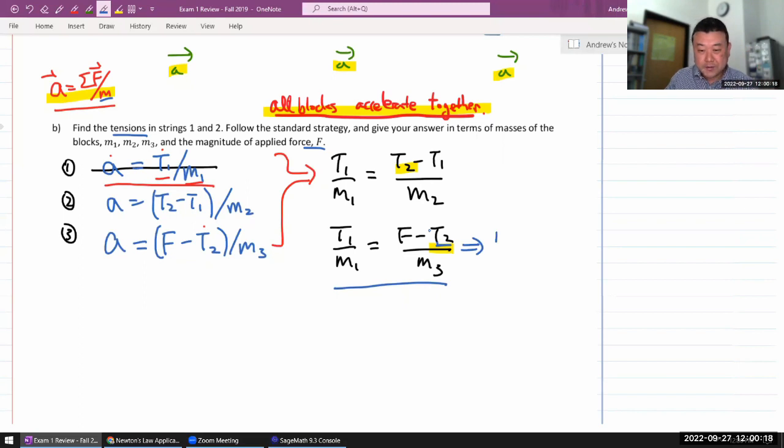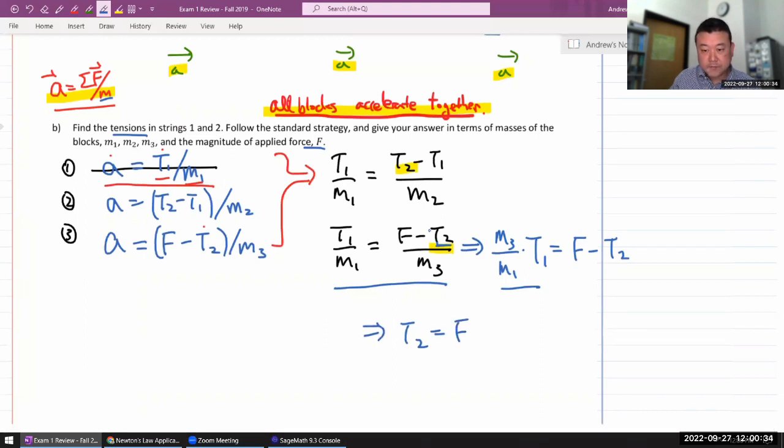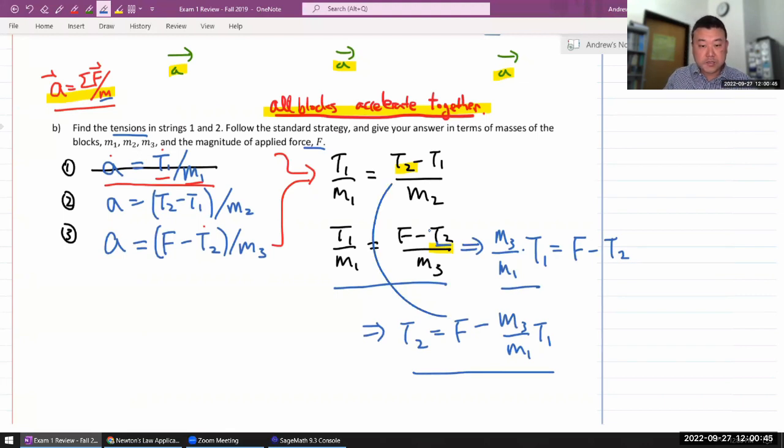So let me just solve this for T2. I need to multiply both sides by M3. And then I have to move T2 over, move everything else over. Let me do one step at a time. Multiply both sides by M3, so I have M3 over M1 for left-hand side times T1, right-hand side will be F minus T2. And I'm imagining moving T2 over and moving this thing over. Once I've done that, I have T2 equals F minus M3 over M1 T1. Okay, that's my expression for T2.